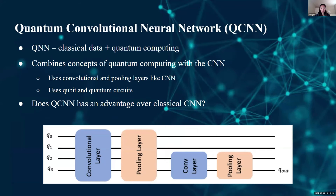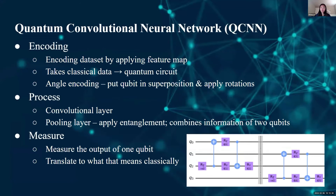Like the classical CNN, we'll have convolutional and pooling layers, but we'll use qubits and quantum circuits instead. As you can see in this image, we plan to apply alternating convolutional and pooling layers on our quantum circuit. The secondary purpose of our research is to test if the QCNN has better accuracy or speed than the classical CNN. The QCNN algorithm contains three main parts: the encoding, the processing, and then the measuring of the data. The encoding converts classical input data into a quantum circuit through angle encoding, putting qubits into superpositions for parallel computation and applying rotations so the data can be further processed.